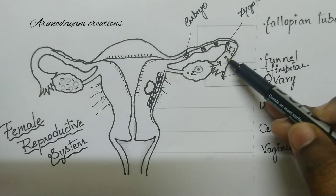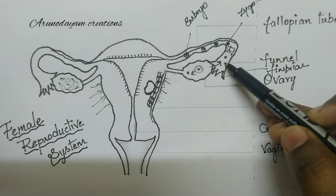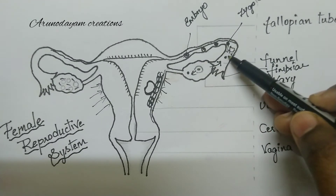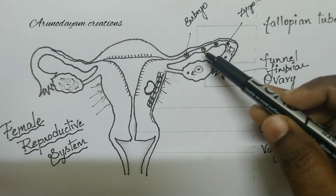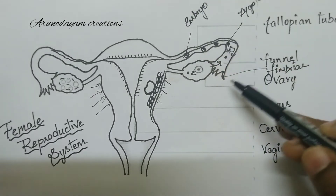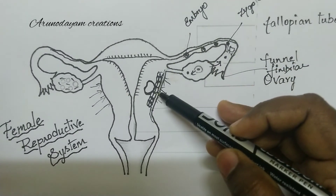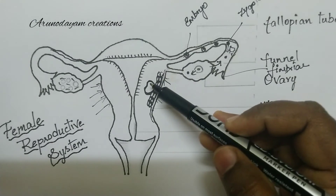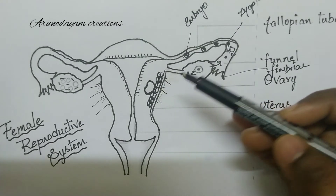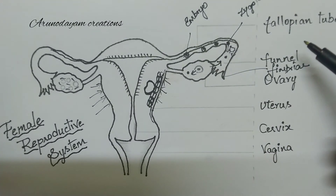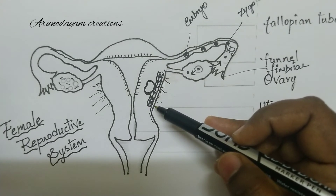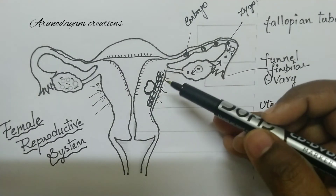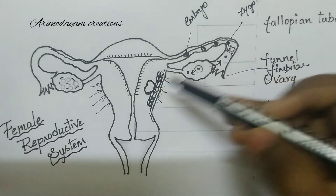After fertilization, the ovum is released into the fallopian tube. Only one sperm fuses with the ovum, it develops into a diploid zygote, which undergoes mitosis to form an embryo. The embryo enters the uterus and attaches to the endometrium — implantation. After implantation, for 9 months the complete development of the baby takes place in the uterus, taking food and oxygen from the mother.